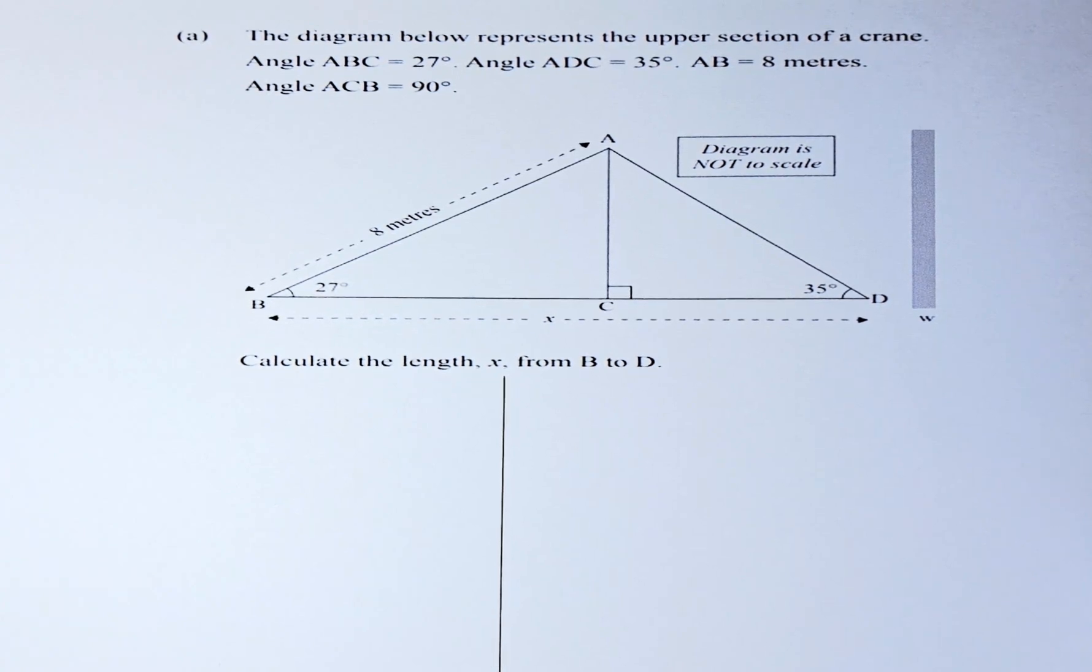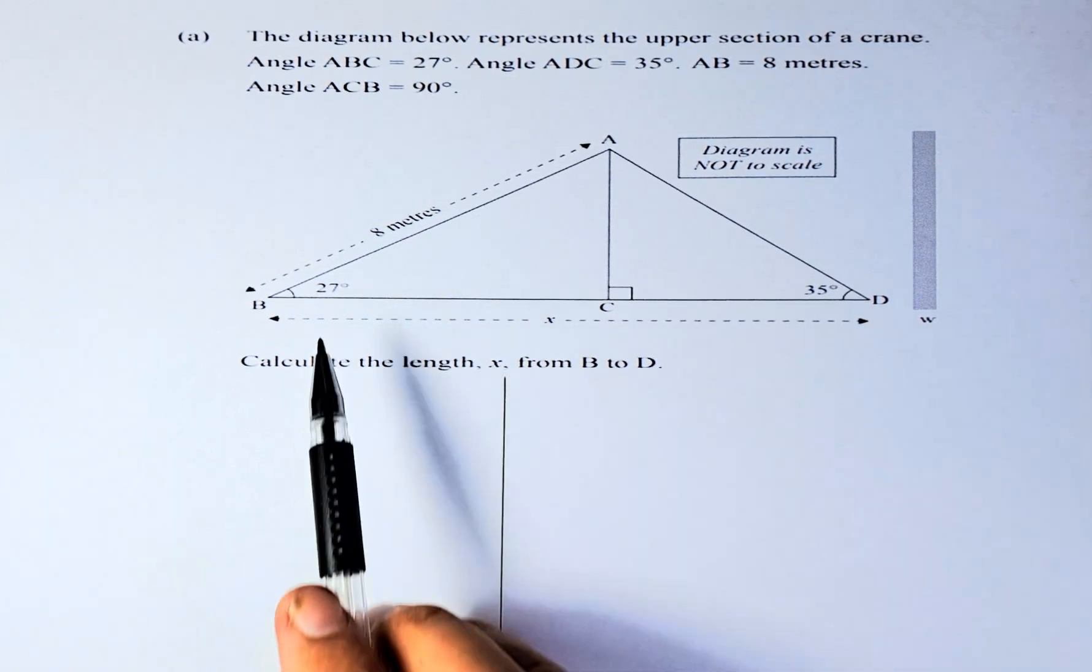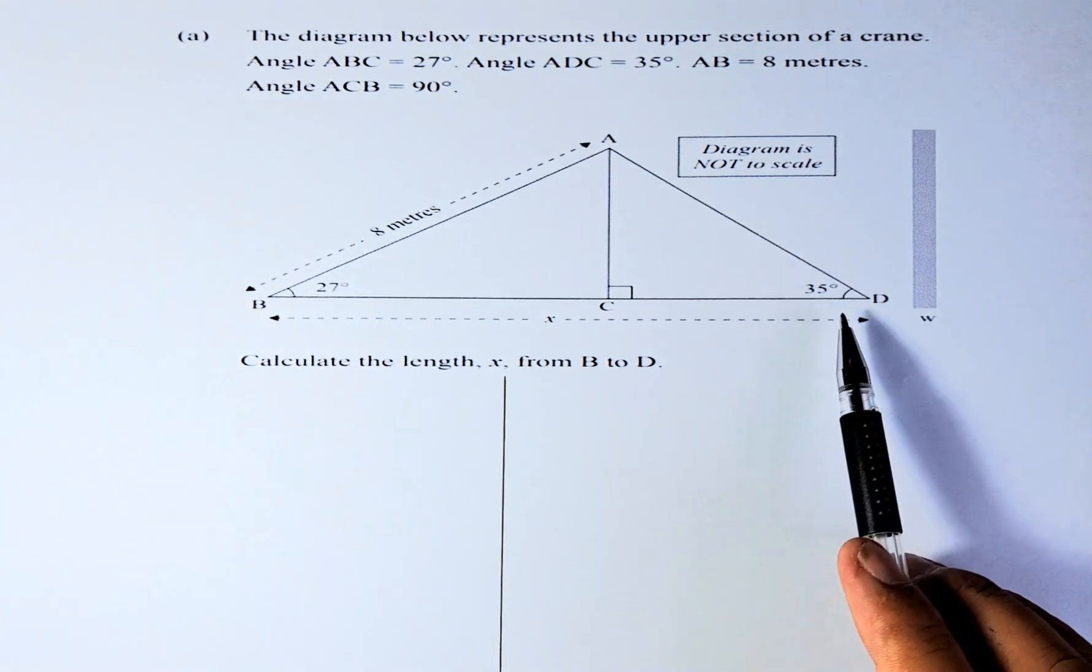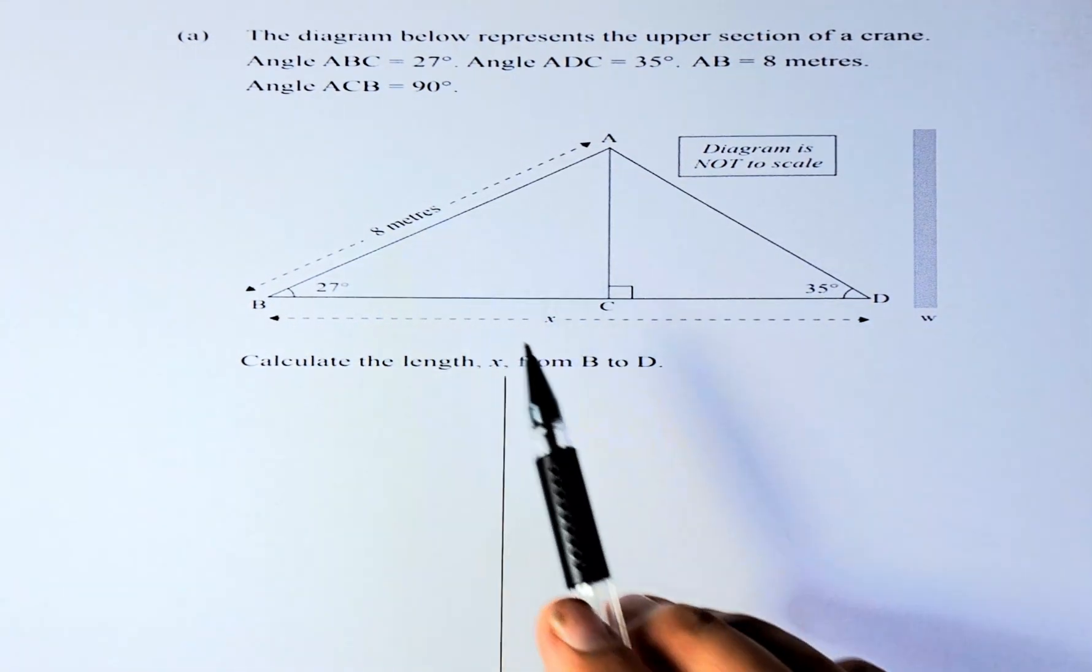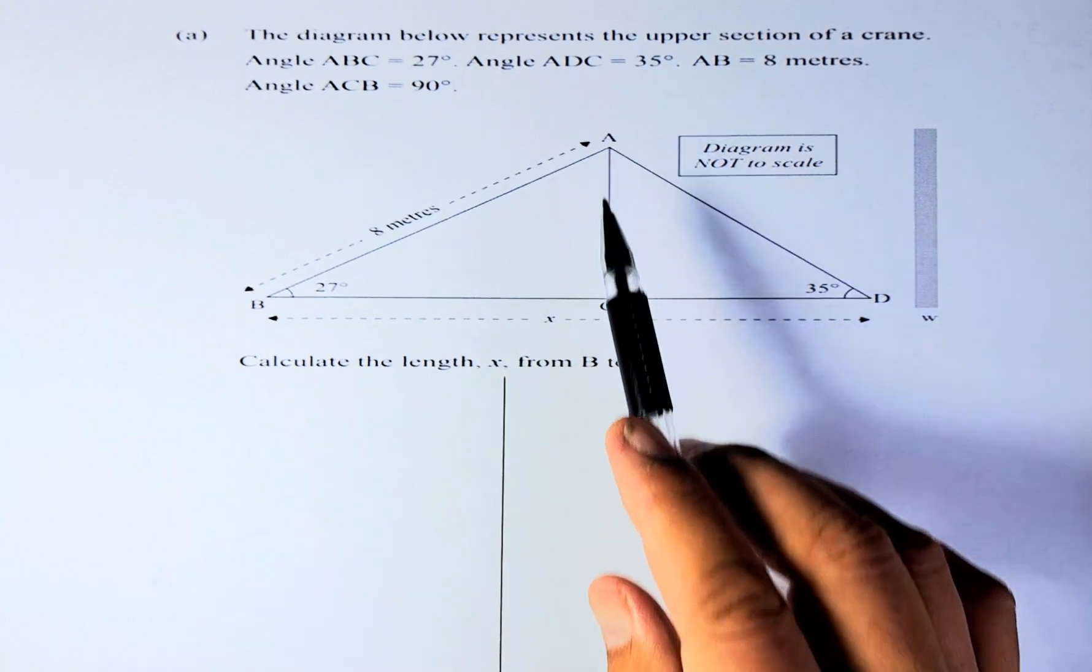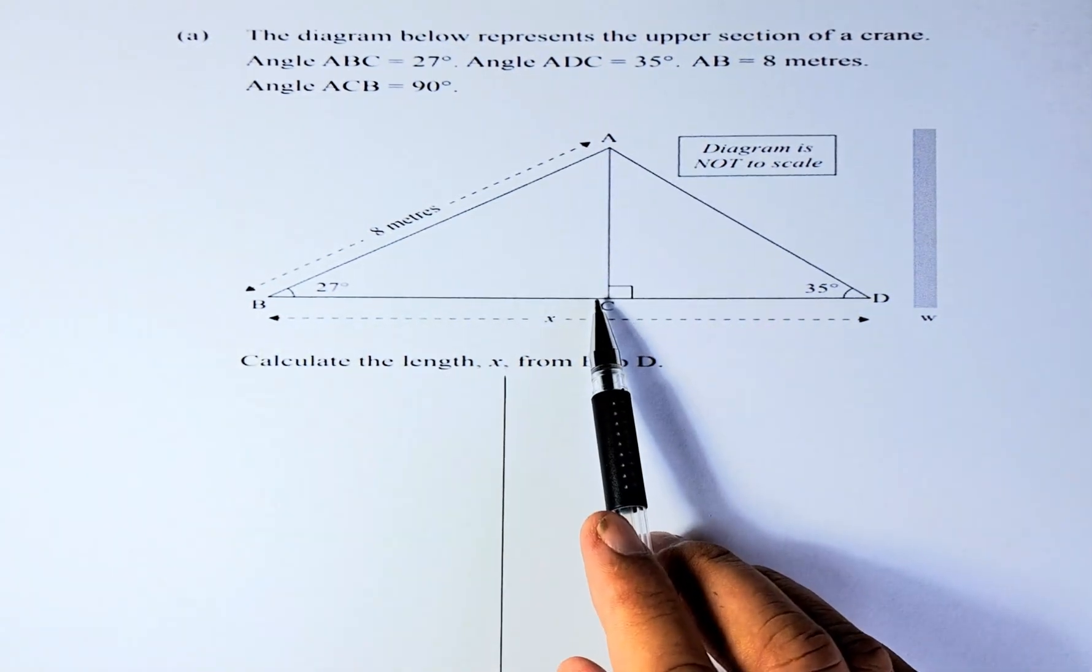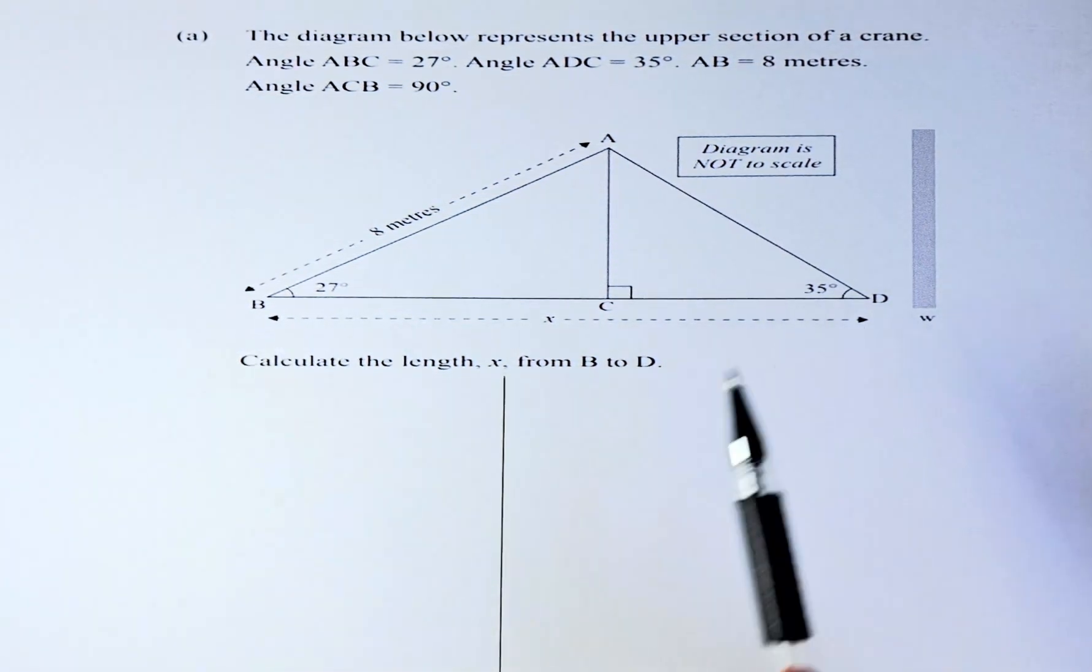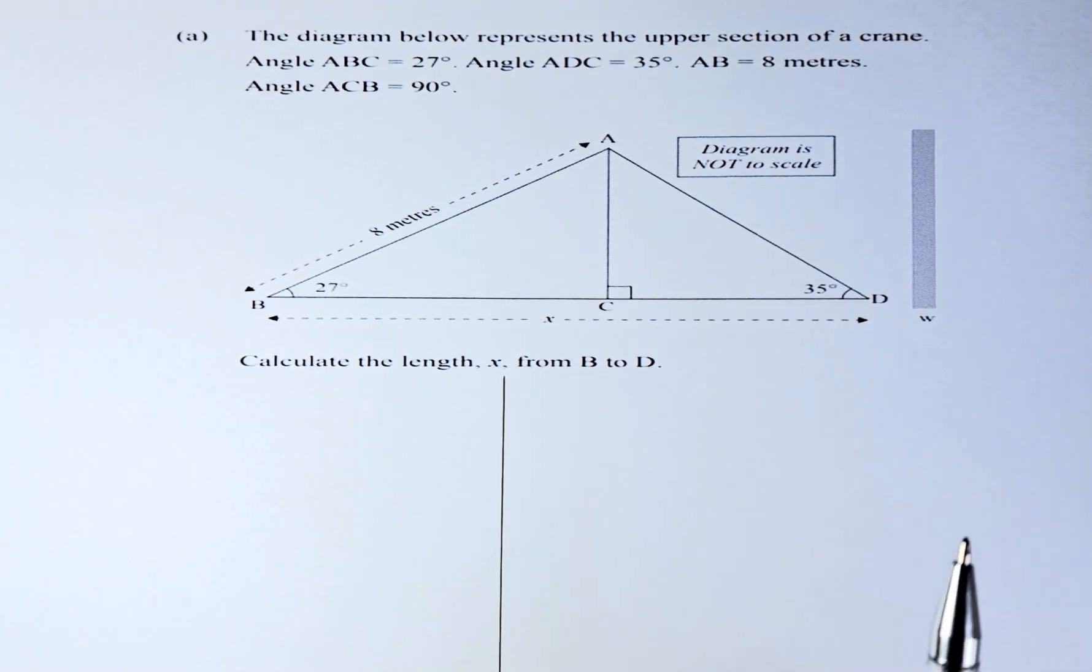The diagram below represents the upper section of a crane. Angle ABC is 27 degrees, angle ADC is 35 degrees, AB is 8 meters, and angle ACB is 90 degrees. Angle ACD will also be 90 degrees. You are going to calculate the length BD, and that's how we're going to solve this.